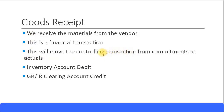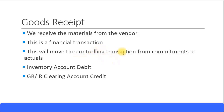In the Controlling module, remember earlier when creating the purchase order it was at the commitment stage. Now, because it's a financial transaction, it will move from commitments to actuals. When you run your reports for internal orders or WBS elements in the CO module, you will see the values move from your commitments section to your actuals section.